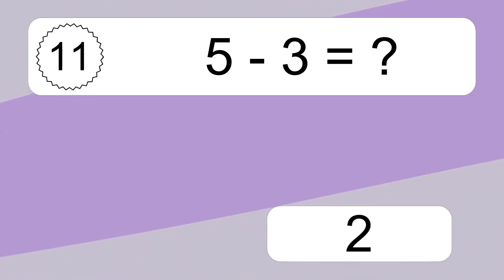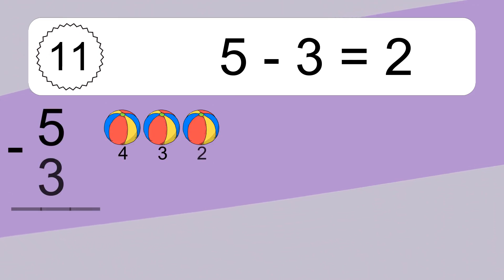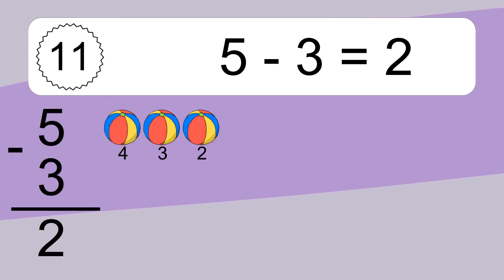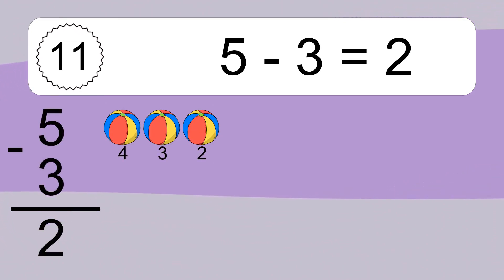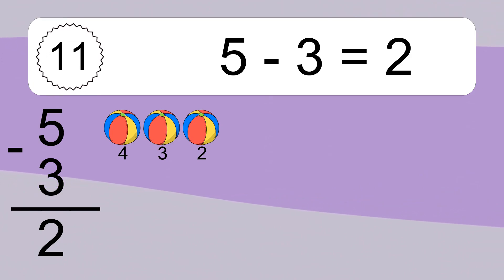5 minus 3 equals what? 5 minus 3 equals 2. Let's count it. 4, 3, 2.